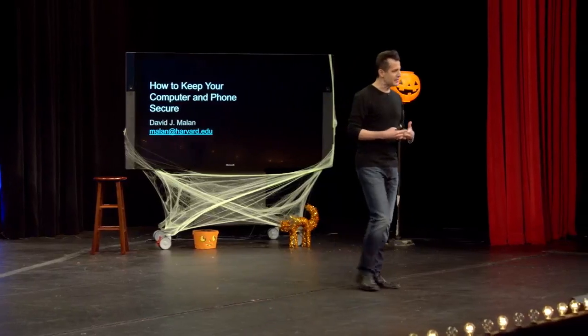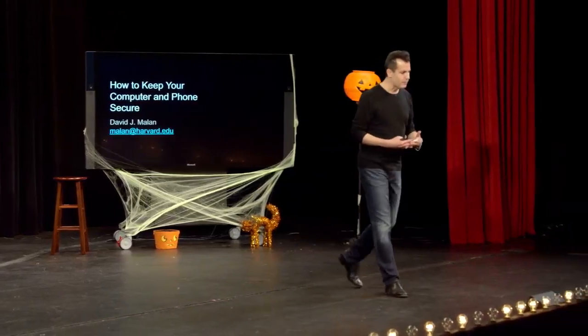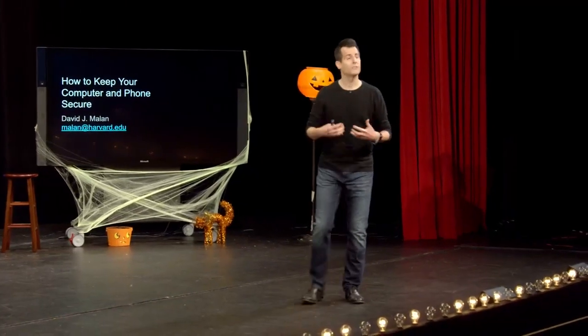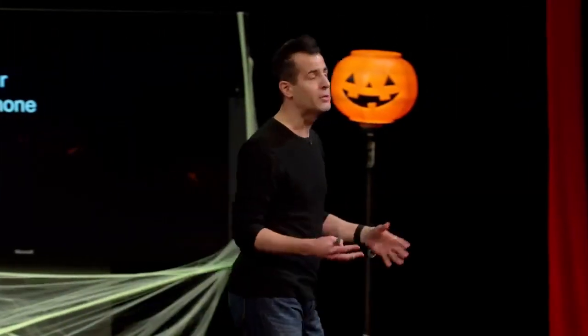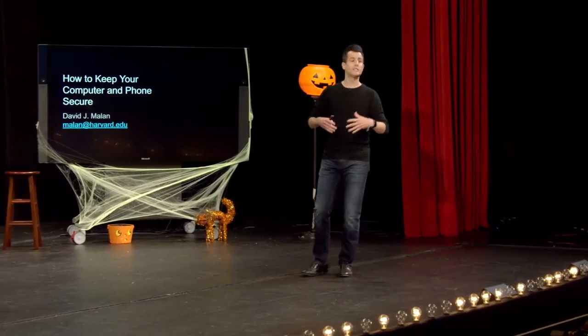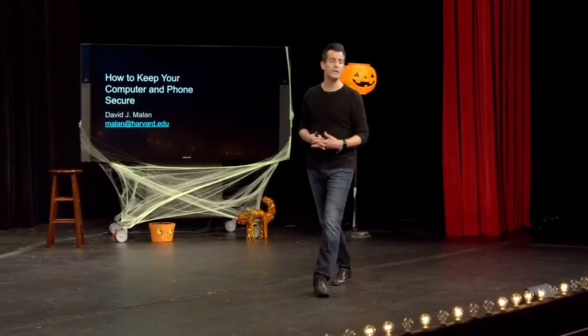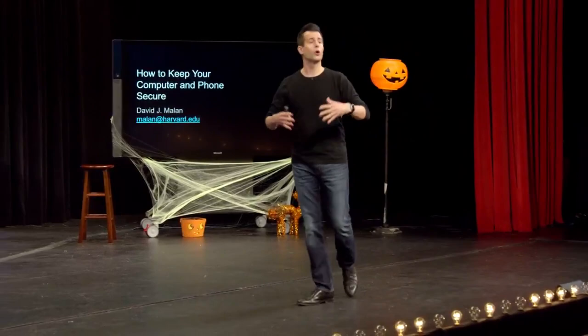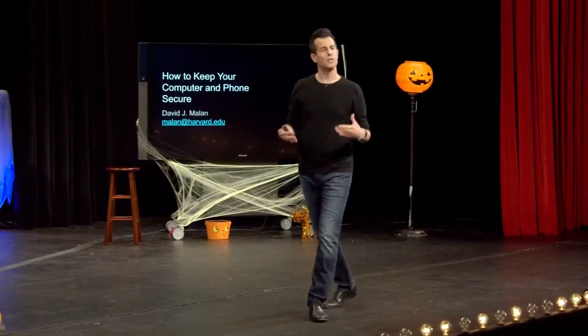Even though we'll get into some of the technicalities of what it means to be secure, this topic is familiar in the sense that all of us encounter good security and bad security in the real world every day. Think about the home you live in — be it a house, an apartment, a dormitory, or somewhere else. Typically you'll have things like locks on the doors, and depending on where you live, maybe bars on the windows.